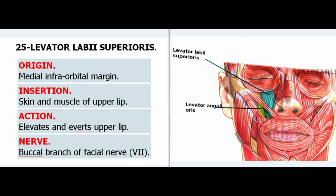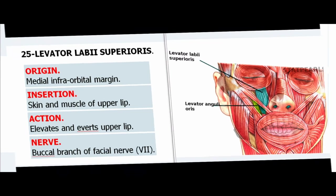25. Levator Labii Superioris. Origin: Medial infraorbital margin. Insertion: Skin and muscle of upper lip. Action: Elevates and everts upper lip. Nerve: Buccal branch of facial nerve (VII).